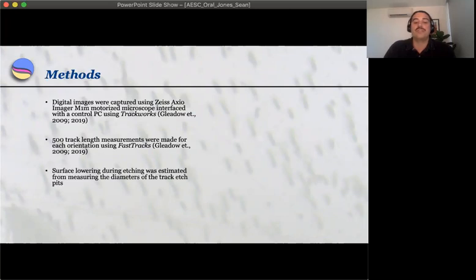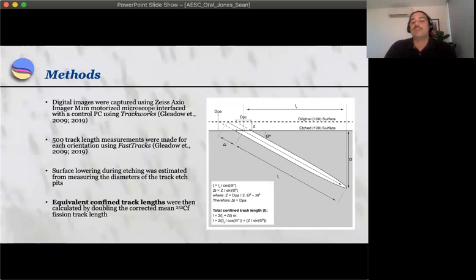We also measured the diameters of the track etch pits to make an estimation of the amount of surface lowering during bulk etching. Then by using the true track length as well as the diameters of the track etch pits, we're able to calculate an equivalent confined fission track length.